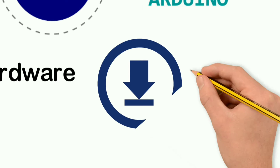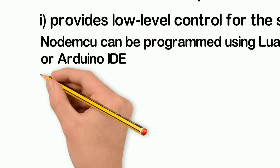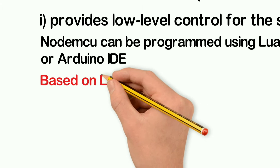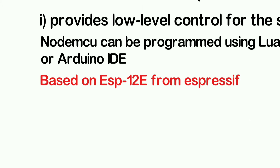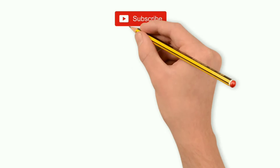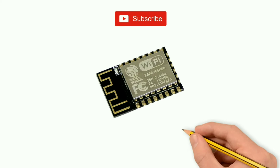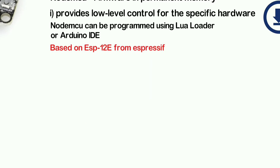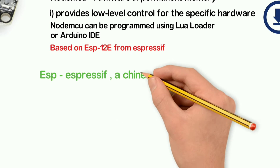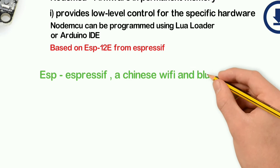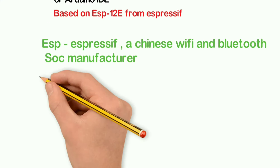If you want to install and use Lua script, you can do so. The NodeMCU has a WiFi SoC chip from a Chinese manufacturer. It includes both WiFi and Bluetooth built in.